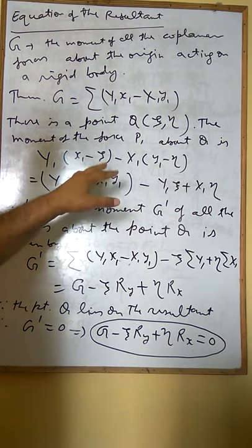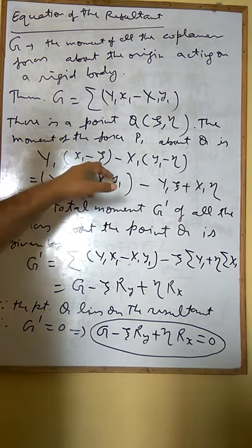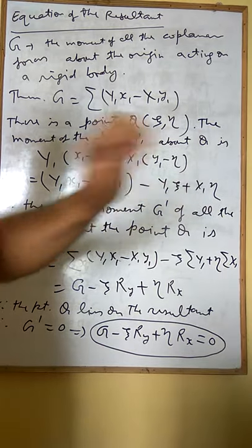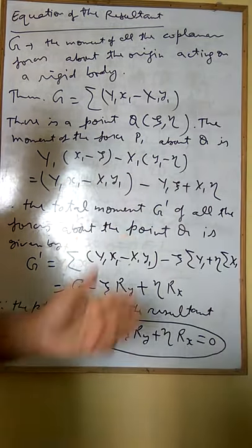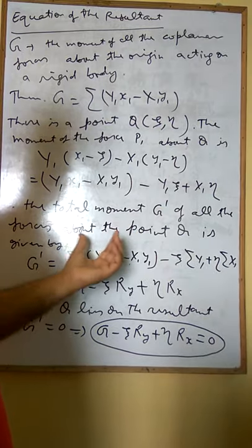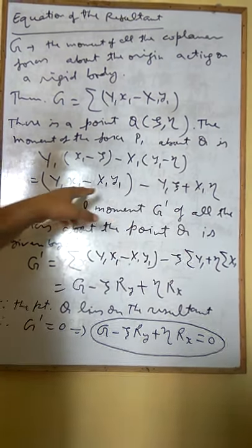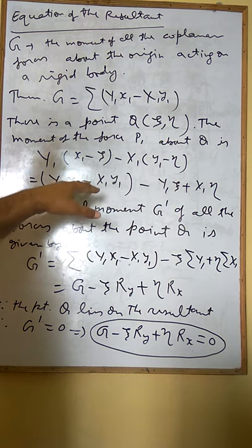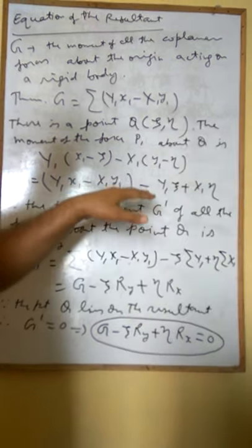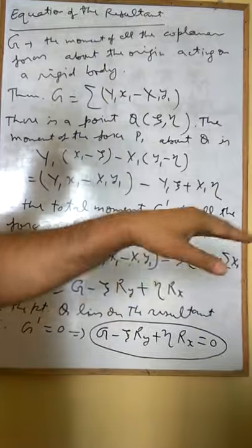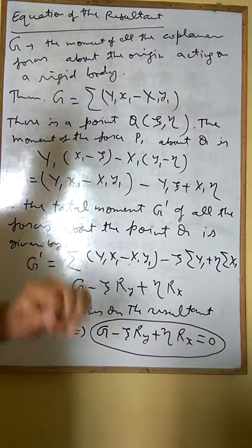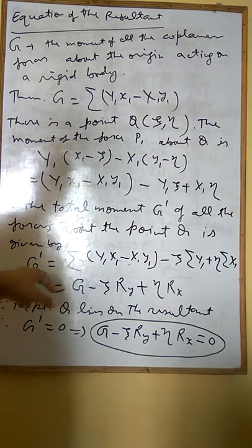Therefore, the total moment G' of all the forces about point Q is: we need to take summations of the same expression for other forces P₁, P₂, P₃, etc. So G' equals the summation over each term.